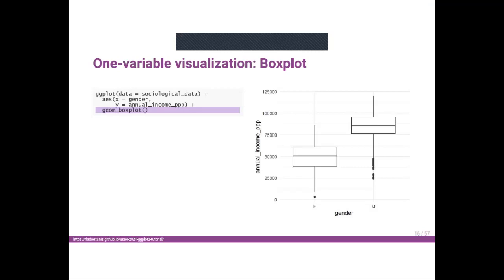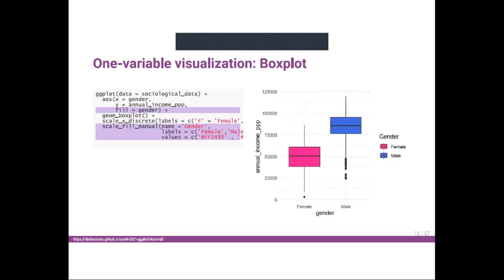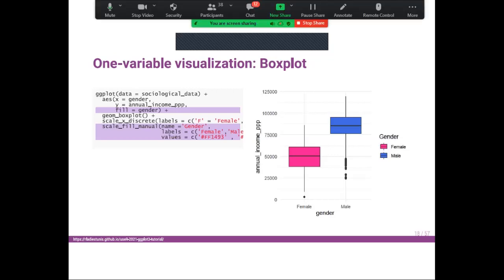I want to have more meaningful labels for 'f' and 'm' because they are not very significant. So I add scale_x_discrete() with labels = c('f' = 'Female', 'm' = 'Male'). I also want to change the color — I want purple for female and blue for male. I use scale_fill_manual(), setting the name to 'gender' to display the legend, giving the labels 'Female' and 'Male', and setting the color values.